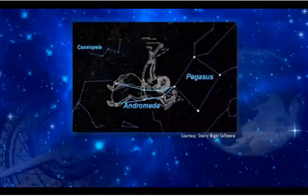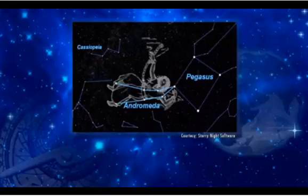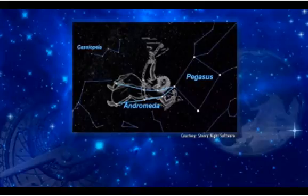First off, look for its home constellation, Andromeda the Princess. That's easy to find because it's connected to the Great Square of Pegasus during any late autumn night. You can find this group of four stars dominating the eastern sky any evening.